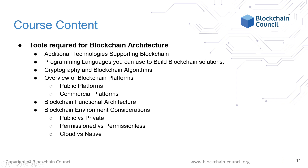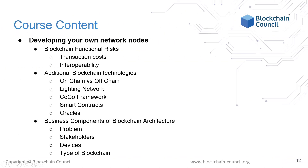From there, we will look at different kinds of blockchains, such as private and public blockchains, permissioned vs. permissionless blockchain, and cloud vs. native blockchains. Next, we will learn about developing our own network nodes, including functional risks, how to solve scaling issues using on-chain vs. off-chain approaches such as the Lightning Network, the COCO framework, smart contracts, and oracles.